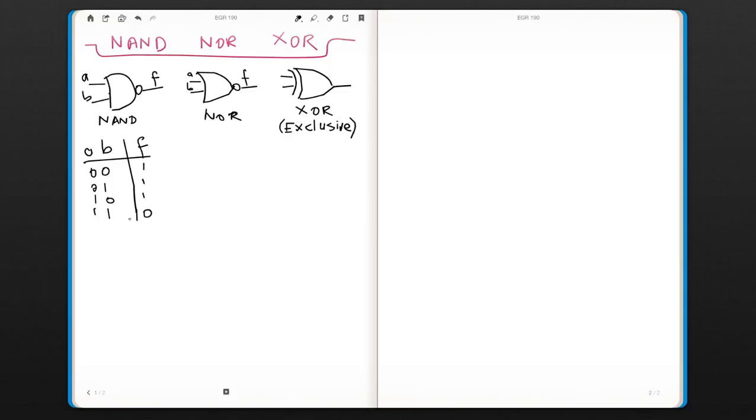And if you look at this table, you can tell the output will only be 0 when both inputs are 1. In all the other cases, the output is going to be 1.